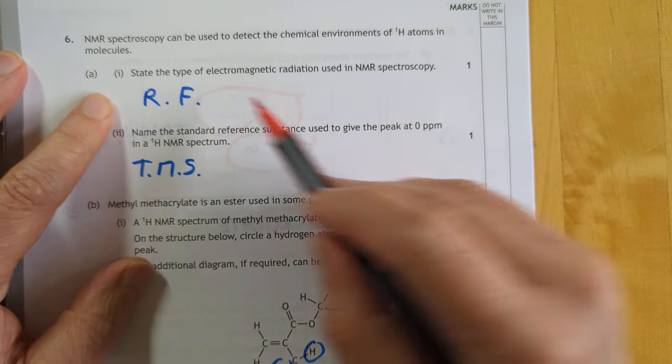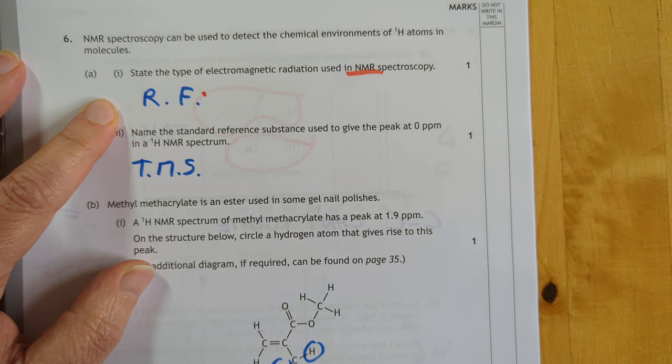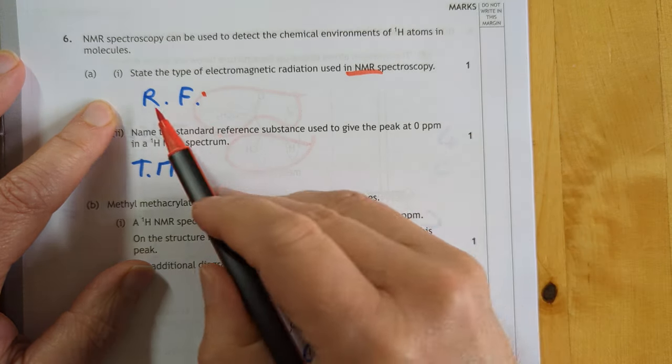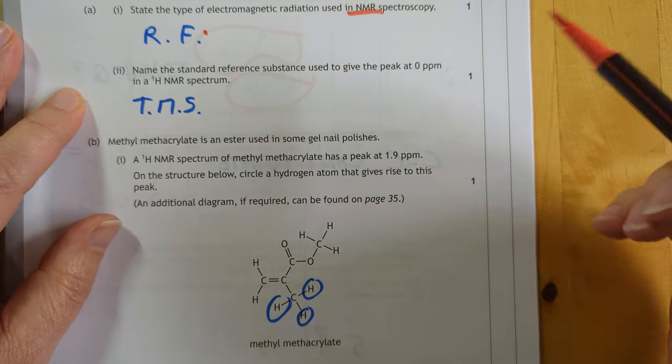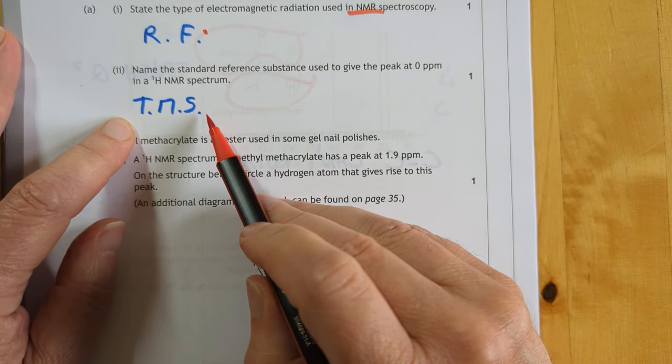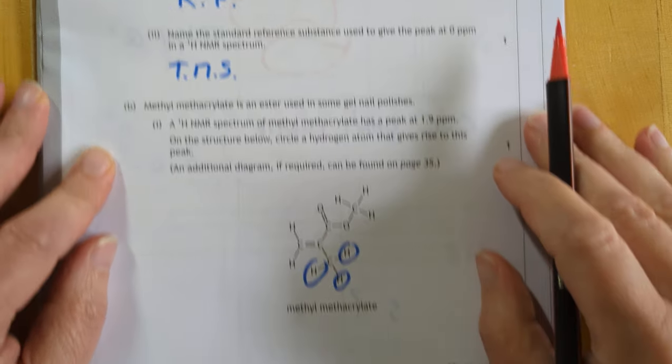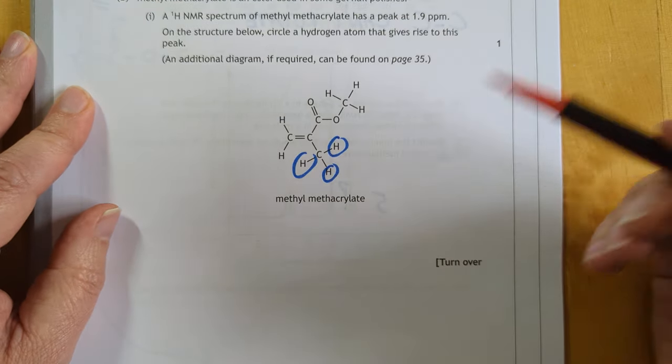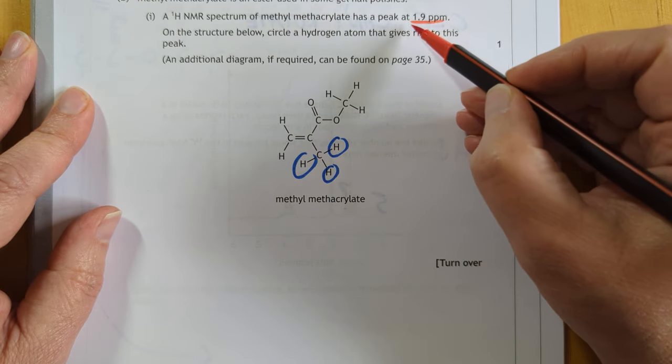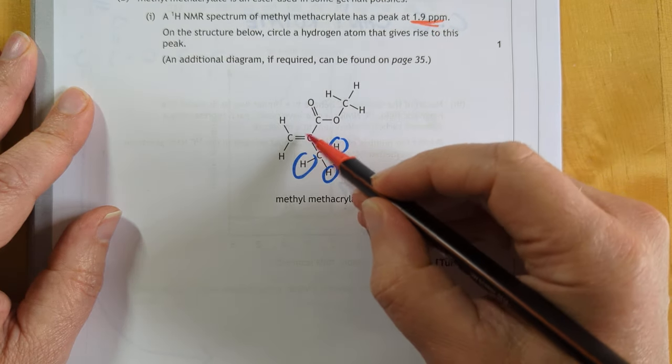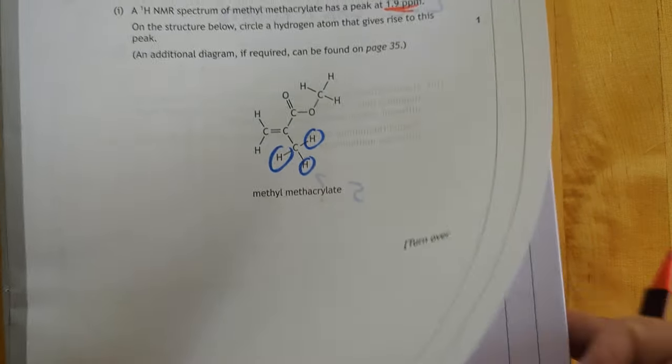Again, interesting, more questions on the nuts and bolts of NMR. It's radio frequency is the answer to that, but a lot of people might not know that. And this as well, tetramethylsilane, I was lazy, I just put the abbreviation. I would imagine you have to give the actual name. Methylmethacrylate, circle of hydrogen atom that gives rise to 1.9 ppm. I'd go and find it, it's H's that are adjacent to a double bond. So any of these three H's should get you the mark. There you go guys.